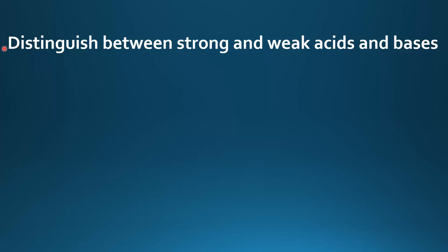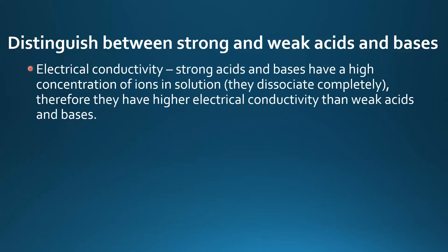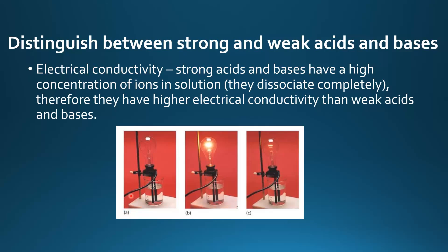Next we look at how to distinguish between strong and weak acids and bases. The first method is electrical conductivity. Strong acids and bases have a high concentration of ions in solution because they dissociate completely, therefore they have higher electrical conductivity than weak acids and bases. Here's an example of an experiment: this bulb is the brightest, so this could be the strong acid or the strong base — they both dissociate completely in solution giving a high concentration of ions which conducts the electricity.